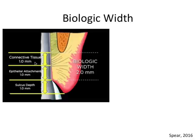On average, as shown in this picture from Spear Education, the average is about one millimeter for each of these layers, for a total of two millimeters of biologic width. If we were placing a veneer or a crown, it must not impinge on this biologic width, especially on the facial margin.